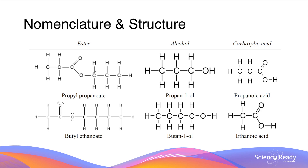In the previous video on esters, we discussed that the structure of an ester consists of a carboxylic acid part and an alcohol part. This information is useful because we can use it to determine the exact carboxylic acid and alcohol used to produce the ester. For example, the structure of propyl propanoate consists of three carbon atoms in the alcohol part and three carbon atoms in the carboxylic acid part.